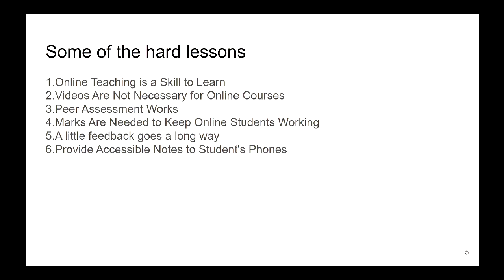One audience member said they'd tried peer assessment in an undergraduate course and it didn't work, asking what elements ensured Tom's peer assessment worked. First of all, these are postgraduate students — postgrads are a bit better at it. One key thing was to keep the marking system simple: zero meaning no good, one meaning okay, two meaning good — a very small scale.